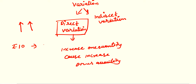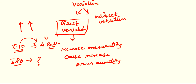For example, for 10 rupees you get 4 balls. So how many balls will you get in 80 rupees? The amount is increasing from 10 rupees to 80 rupees, and correspondingly the number of balls is also increasing. So this is direct variation.